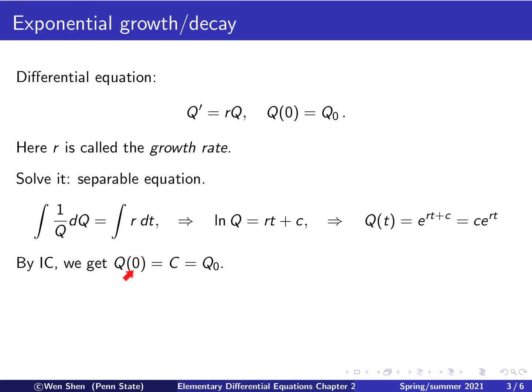Q(0) is, if you put t to be 0, you just get c, and this is Q0. So that's exactly what c will be. Okay, then we can put this back in and write out our solution. Q(t) simply equals Q0 times e to the rt.